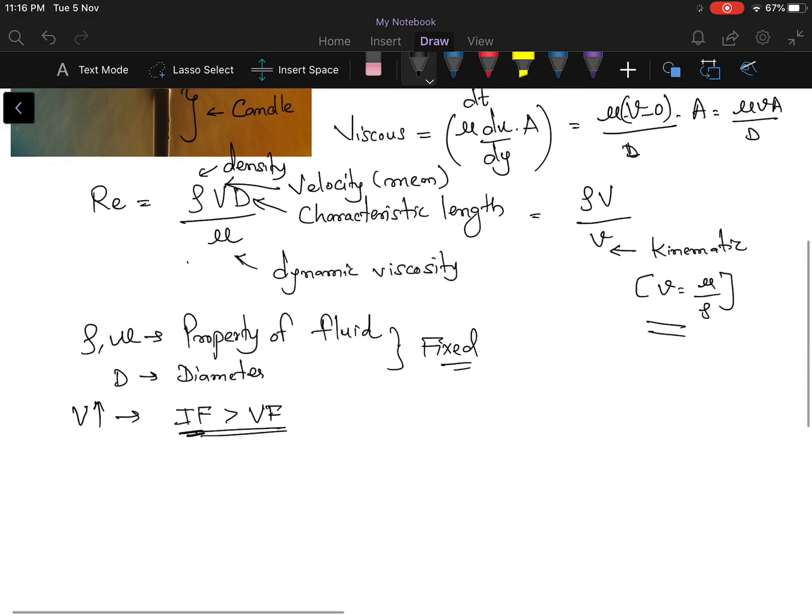And the turbulence is created when the velocity increases. So this is the physical interpretation of the Reynolds number. And the point at which the flow changes from laminar to turbulent is called critical Reynolds number. And we generally note it as Re critical. And this critical Reynolds number is 2300 for flow inside a pipe, and it is 5 into 10 power 5 for flow over the flat plate, and it is between 1 to 10 for flow around the sphere.